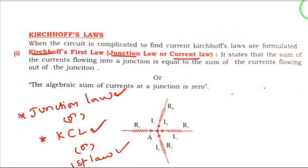What is the first law about? The first law is all about current — it talks about current. At the junction, if you see a circuit with four resistors connected, the current flowing into a junction equals the sum of currents flowing out of the junction.